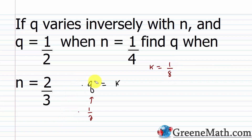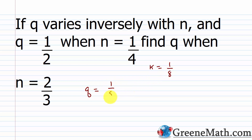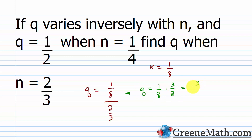Now that we know k equals 1/8, find q when n equals 2/3. So q equals 1/8 divided by 2/3. We multiply by the reciprocal of 2/3, which is 3/2, giving us 3 over 16. So q in this scenario is 3/16.